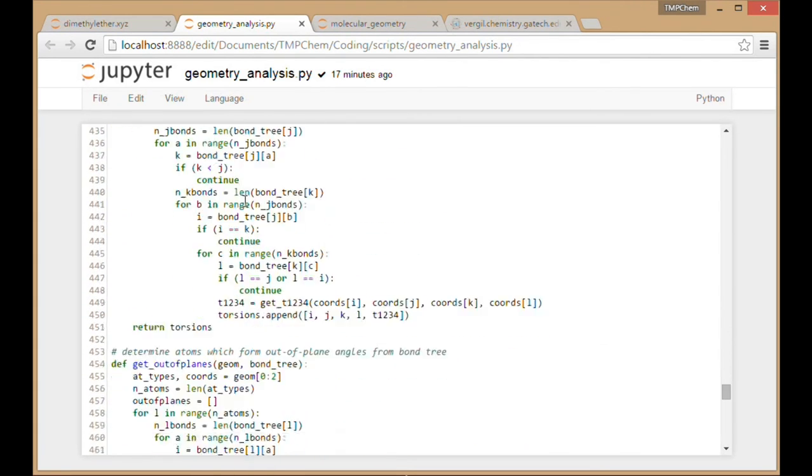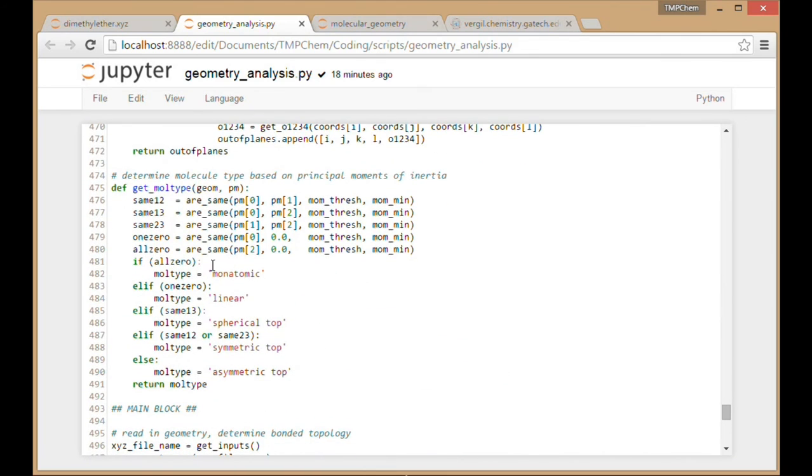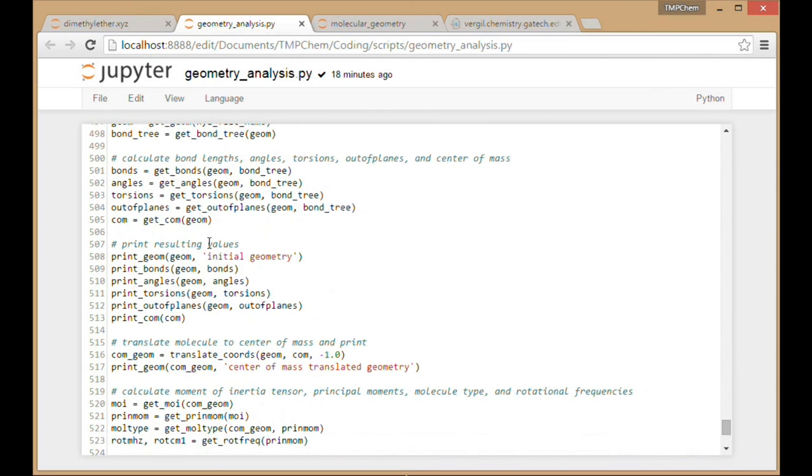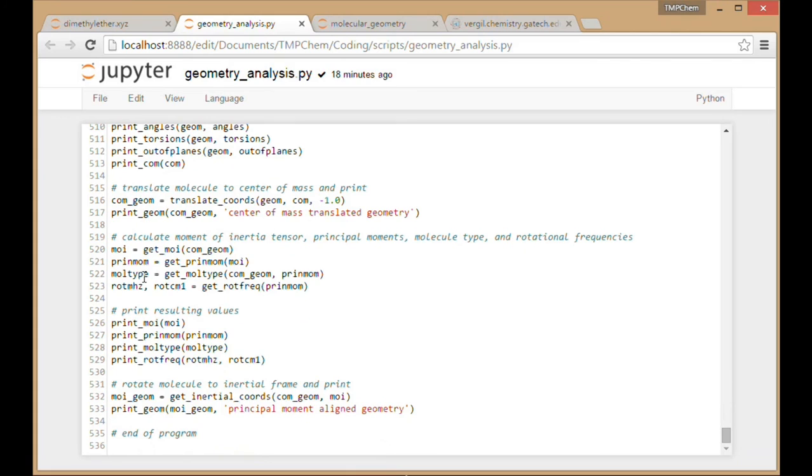Molecular type: comparing values, whether A, B, and C are the same or not. Classifying them as monatomic, linear, spherical top, symmetric top, or asymmetric. My main block has all of its functions from before: getting the principal moments, molecule type, and rotational constants, then printing out all of those values and getting the final geometry which is rotated to the diagonal coordinates for the moment of inertia tensor.